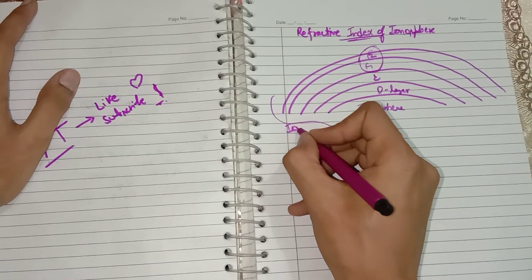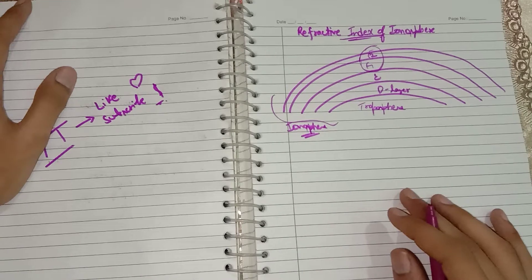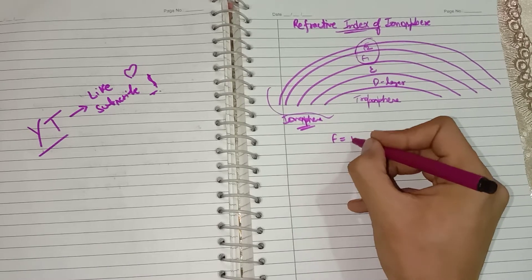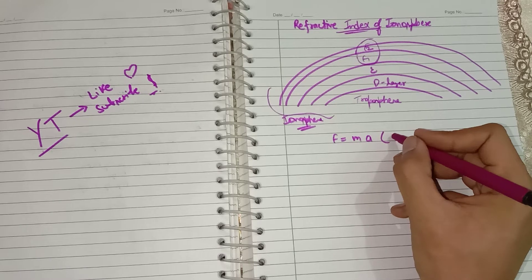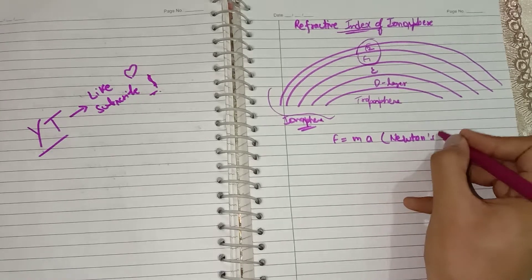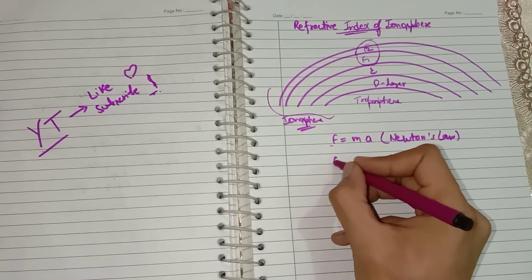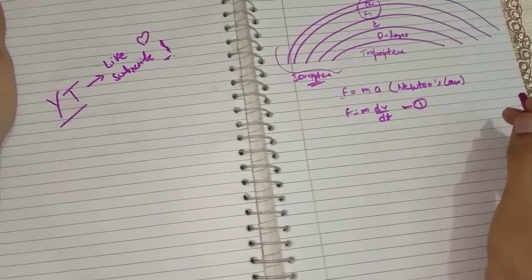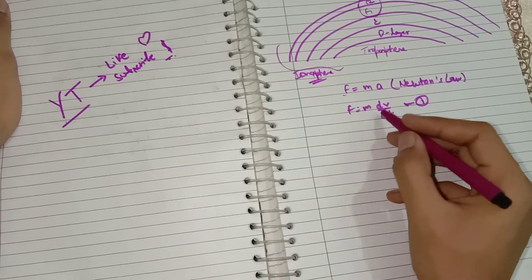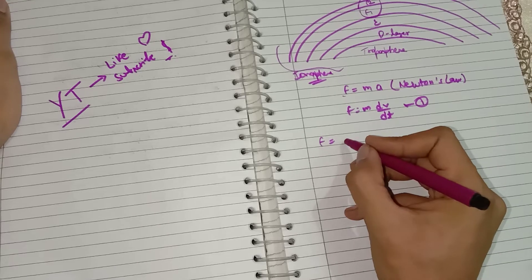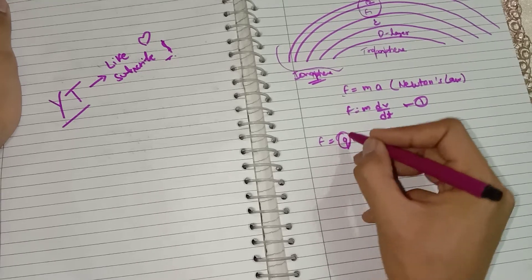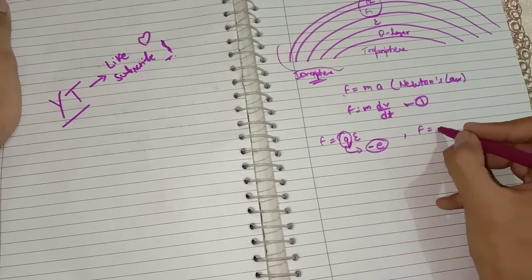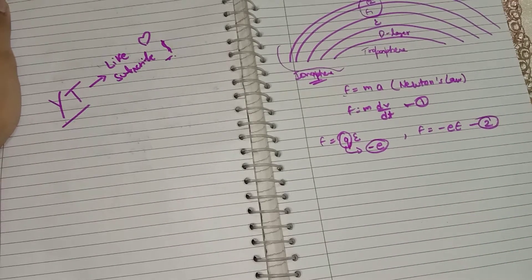To calculate the refractive index of the ionosphere, we start with Newton's law: F = ma, which we can write as F = m(dv/dt). This is our first equation. Another force in terms of electric field is F = QE. Since we are considering an electron, Q = -e, so the force becomes F = -eE. This is our second equation.